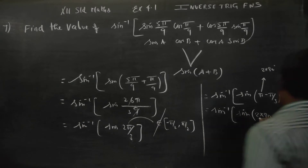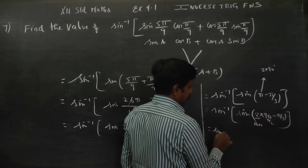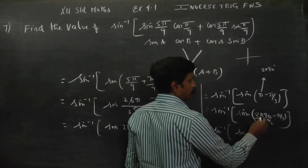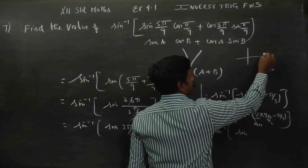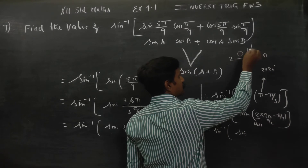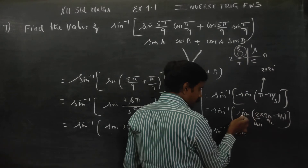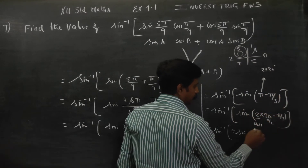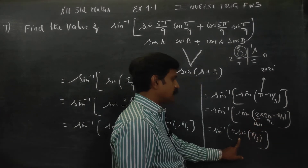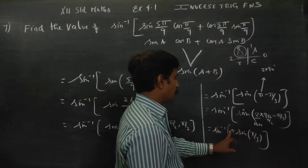Since it is an even number multiple of 90, there is no change in the trigonometric function — sin stays as sin. The angle 2×90 minus θ falls in the second quadrant, where sine is positive. So the result is positive, and we get π/3 as the answer.